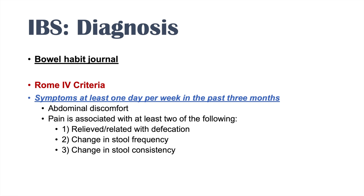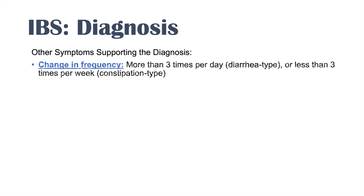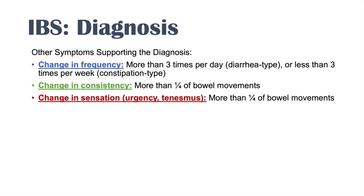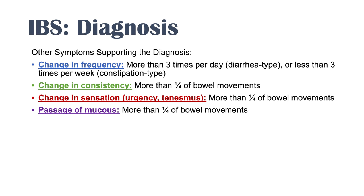Other symptoms that support the diagnosis include a change in frequency — more than three times per day in the diarrhea type, or less than three times per week in the constipation type. A change in consistency occurs with more than a quarter of bowel movements. A change in sensation such as urgency and tenesmus also occurs with more than a quarter of bowel movements, as does passage of mucus and a sensation of bloating.